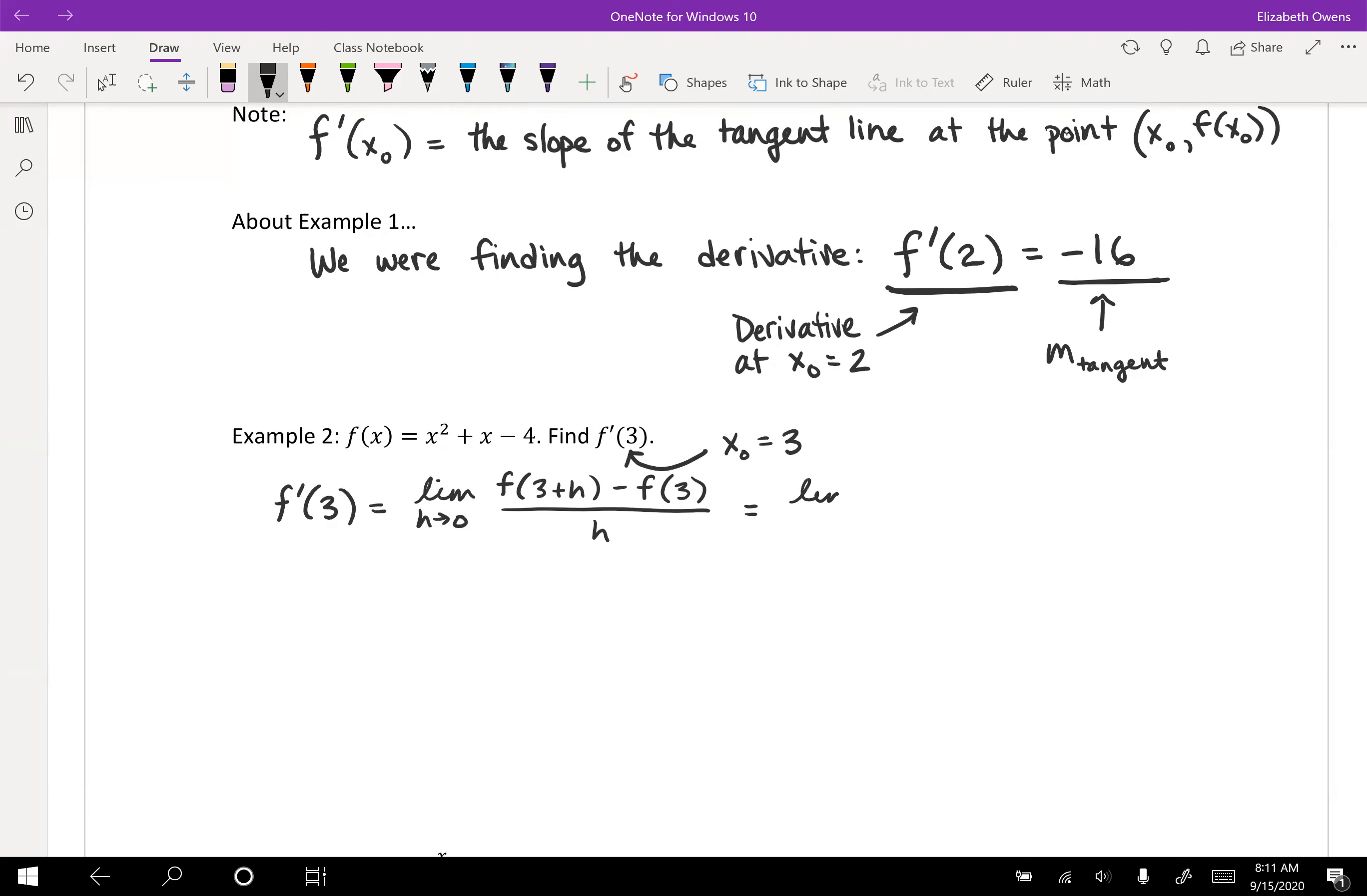We're going to write f prime of 3 equals, and then it's going to be that limit as h approaches 0, of f of x naught plus h, so that would be 3 plus h, minus f of x naught, which is 3, all over h. Just like finding the slope of a tangent line. We use the same type of process here.